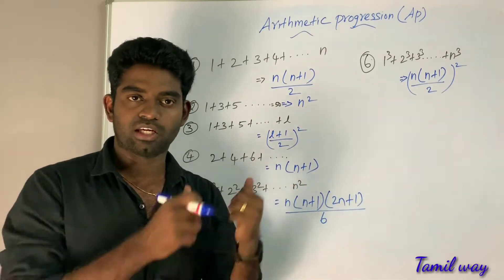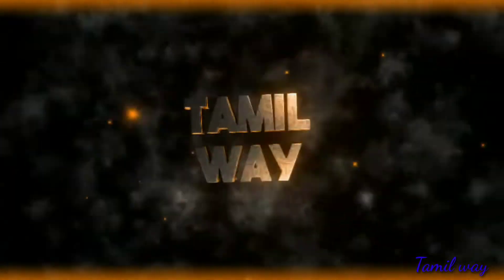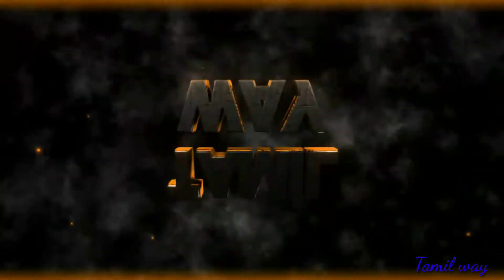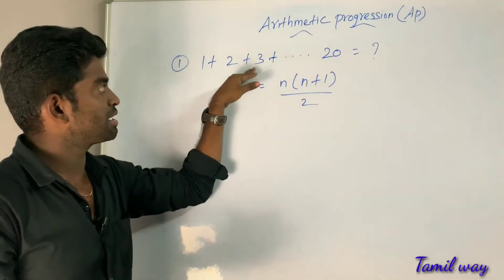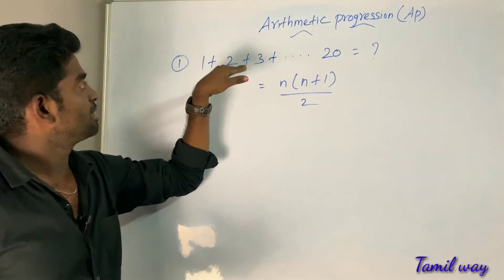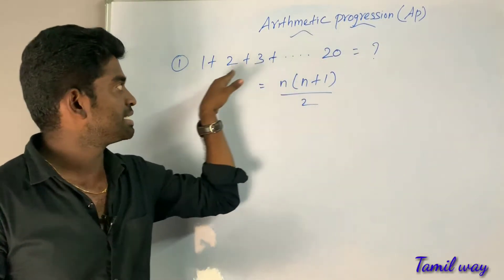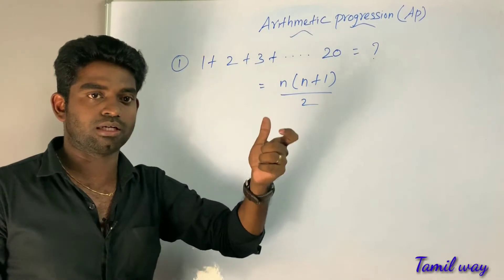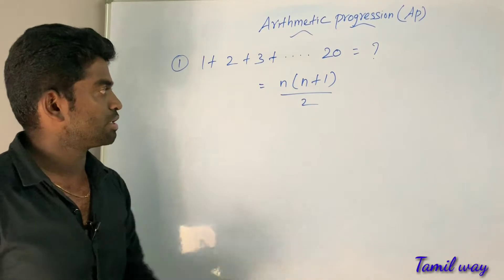Let's go through the examples in the video. First, let's see: 1 + 2 + 3 + ... up to 20. How to solve this? Use the first formula: N(N+1)/2.